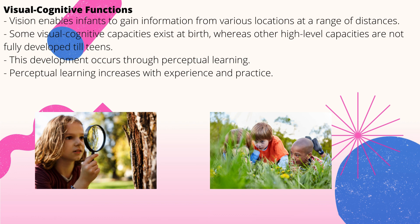By coordinating visual and auditory input, infants acquire information as they explore more in physical and social environments. Some visual cognitive capacities exist at birth, whereas other capacities are not fully developed until the teenage years. This development occurs throughout perceptual learning and the process of extracting information from the environment, which increases experience and practice abilities through stimulation from the environment.